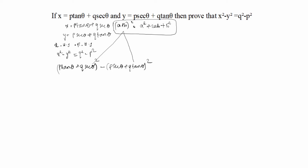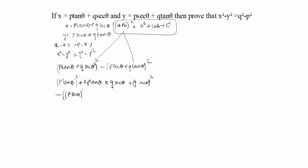We apply this formula. For x², we get: p²·tan²θ + 2pq·tan θ·sec θ + q²·sec²θ. Then we subtract y², which is (p·sec θ + q·tan θ)², expanded as p²·sec²θ + 2pq·sec θ·tan θ + q²·tan²θ.